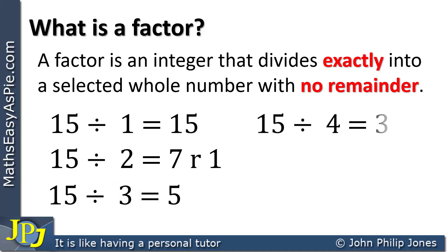15 divided by 4 goes 3 remainder 3. There's a remainder, which means it does not go exactly, so 4 is not a factor of 15.